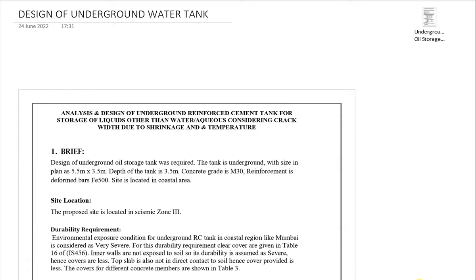Let's start the analysis and design of this underground water tank with the given dimensions. This tank can be used for storing water, aqueous liquid, or non-aqueous liquid. We will also consider crack width due to shrinkage and temperature stresses, which are also called immature cracks in concrete. The dimensions are: length 5.5 meters, width 3.5 meters, depth 3.5 meters. Concrete grade is M30 and reinforcement is deformed bars FE500. The site is located in a coastal area.